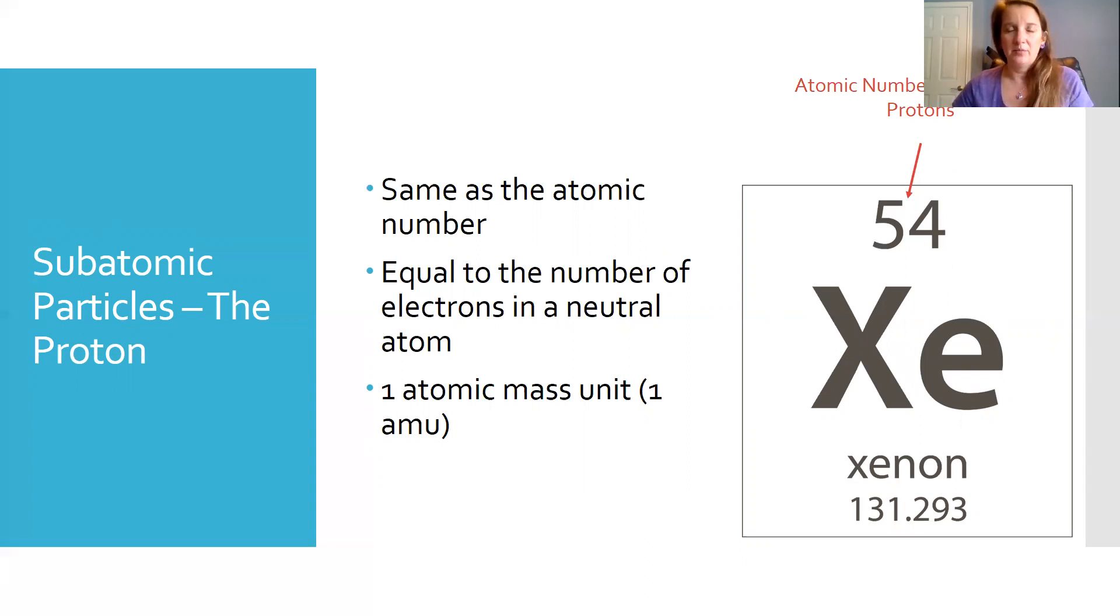When we have neutral atoms, and we'll use the term atoms to talk about neutral substances, the number of protons is going to be equal to the number of electrons because the number of positives has to equal out to the number of negatives. And we say that the mass of the proton is one atomic mass unit.